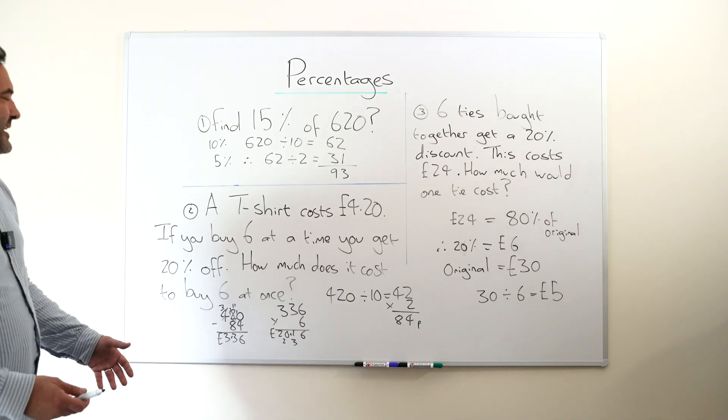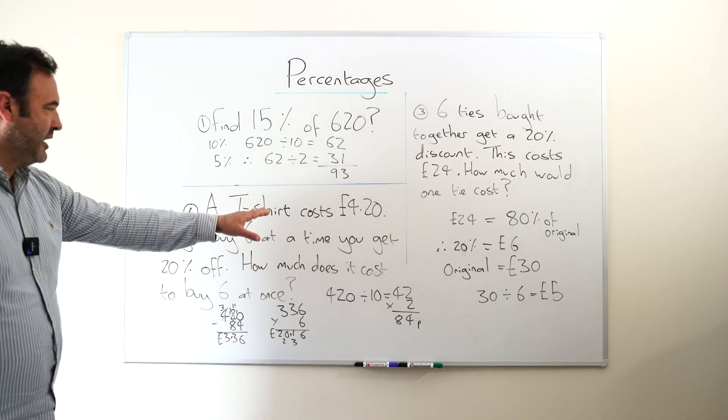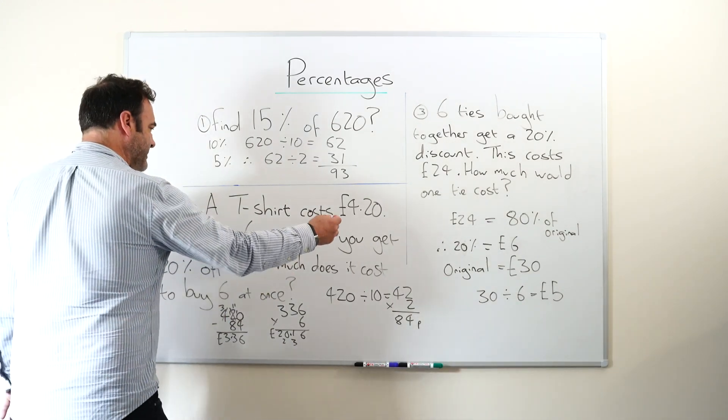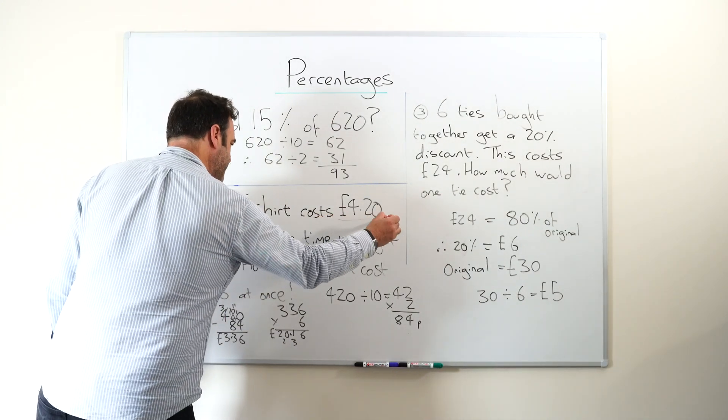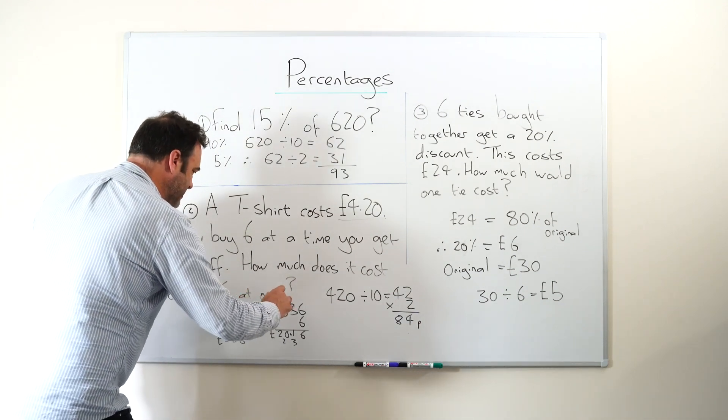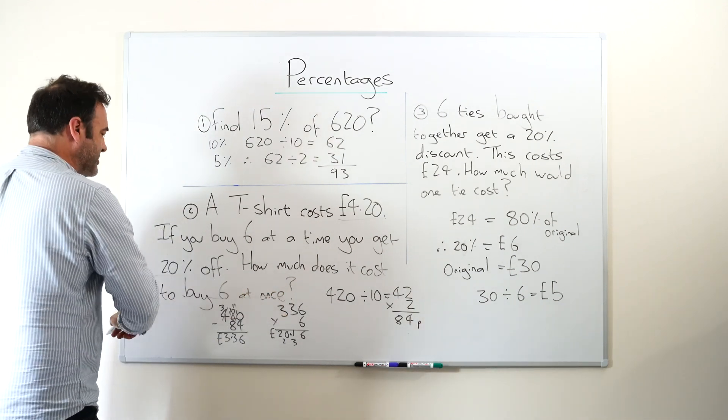But often kids get flustered in the exam, they see a wordy question. It's often best to underline key things. So we know that that costs four pound 20, we might underline that. 20%, that's a key piece of information. Six at once is also, so get the child to underline that too.